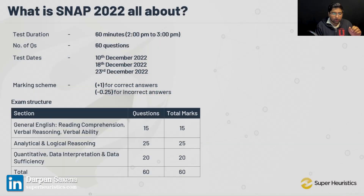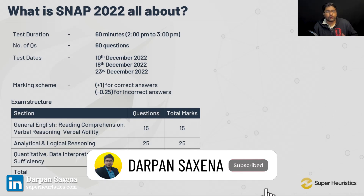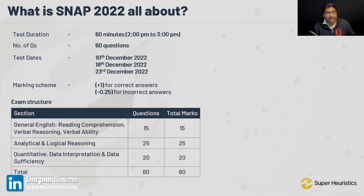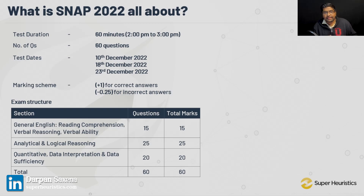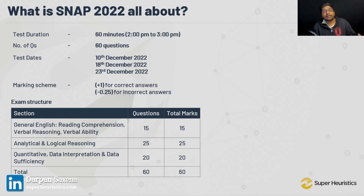The exam structure broadly has three sections. The first one is General English — what you know as VA — which has verbal ability, reading comprehension, and verbal reasoning. It's called General English in SNAP and you will have 15 questions from this. The second is Analytical and Logical Reasoning, similar to LR, with 25 questions. The third section is Quant, which includes data interpretation and data sufficiency, with 20 questions. Overall, you have 60 questions.